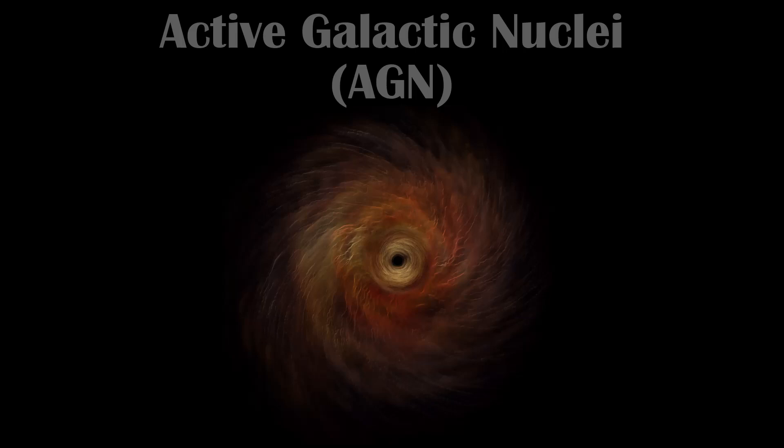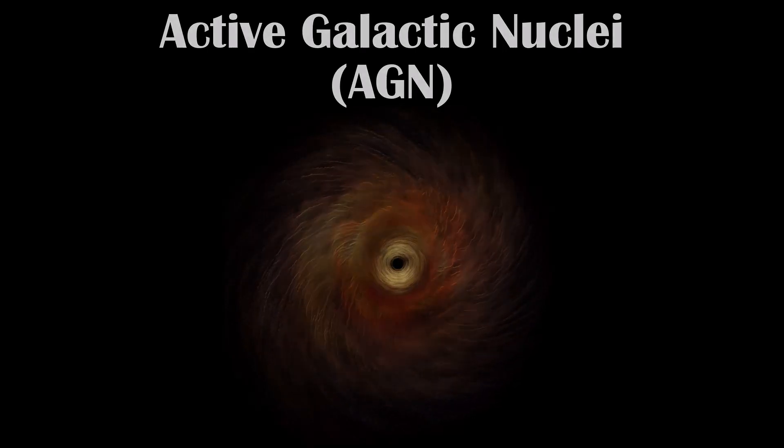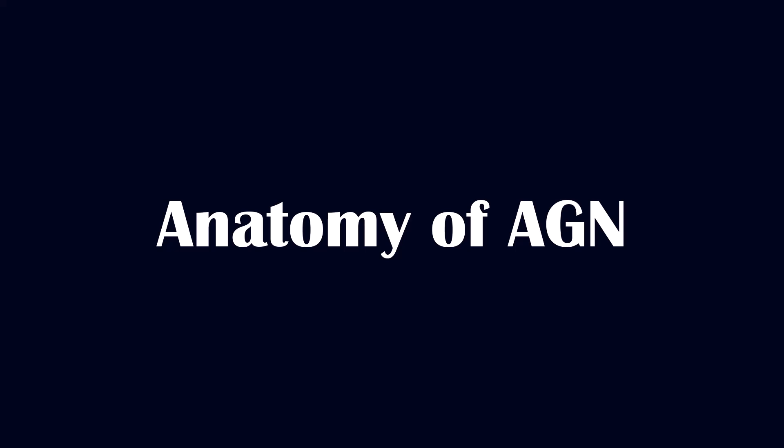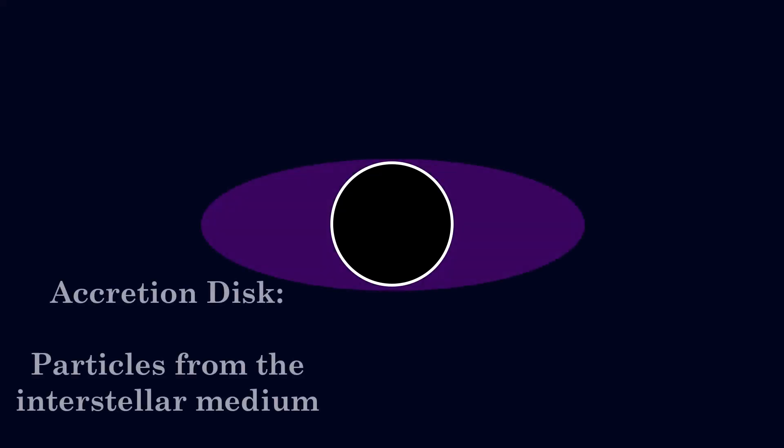When supermassive black holes are accreting matter and doing cool things to influence their host galaxy, we refer to them as Active Galactic Nuclei, or AGN for short. The typical structure of an AGN is as follows: at the centre is the aforementioned supermassive black hole, which is surrounded by an accretion disk of gas and dust from the interstellar medium.